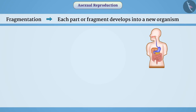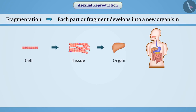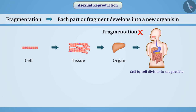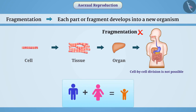Body structures of other multicellular organisms are complex. In such cases, there is formation of tissue from cells and formation of organs from tissues. The location of organs is fixed in the body, due to which cell-by-cell division of these organisms is not possible. Therefore, fragmentation is not seen in such organisms, and we see a complex process of reproduction.